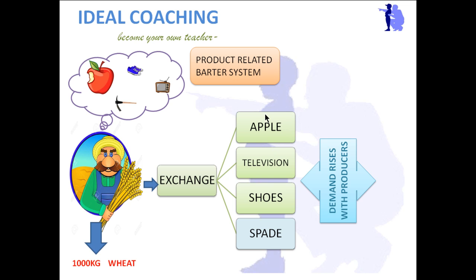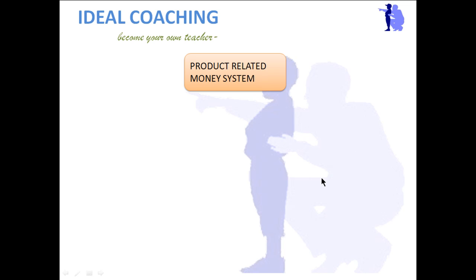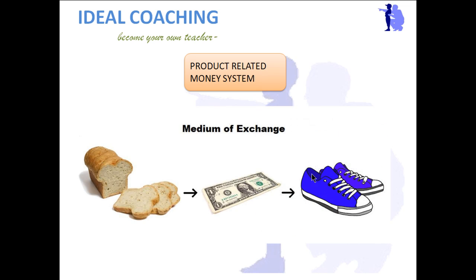When supply increases through production of goods like shoes and other products, demand in the market increases because many people want those products. This increase in demand gives rise to employment because producers must increase their production and hire more people. In the money system, goods are sold for money which is then used to buy other products, and this also generates employment.